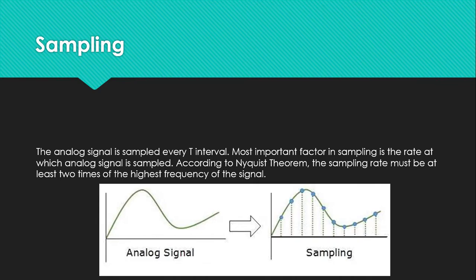The analog signal is sampled at every T-interval. The most important factor in sampling is the rate at which the analog signal is sampled. According to the Nyquist theorem, the sampling rate must be at least twice the highest frequency of the signal.